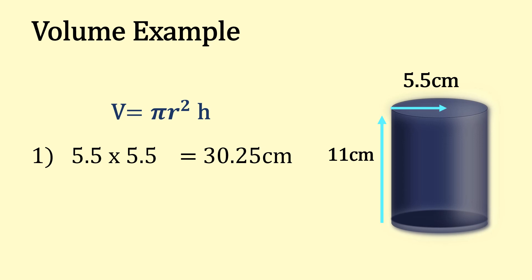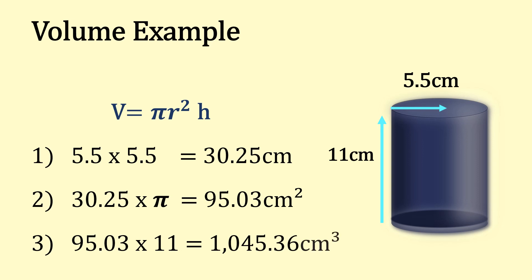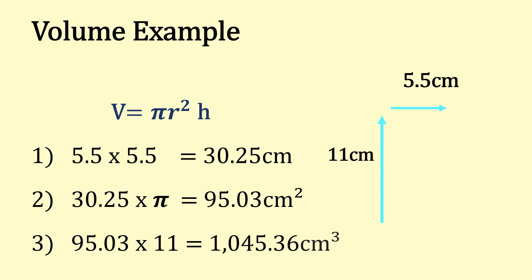Then we're going to take this number and times that by π, which gives us 95.03. And then, of course, we times that by 11, which is the height of the cylinder, which gives us 1,045.36 centimeter cubed.